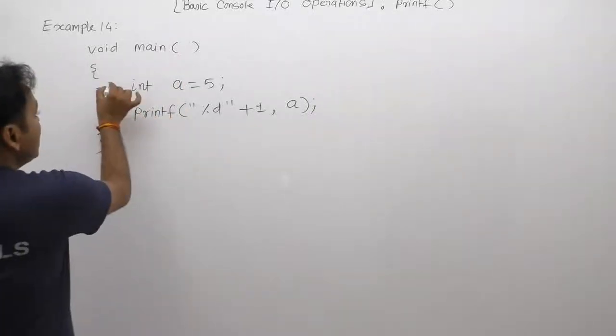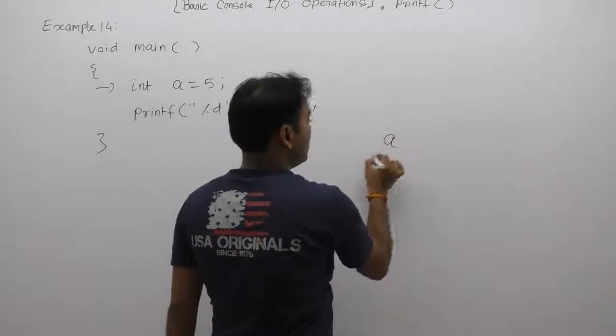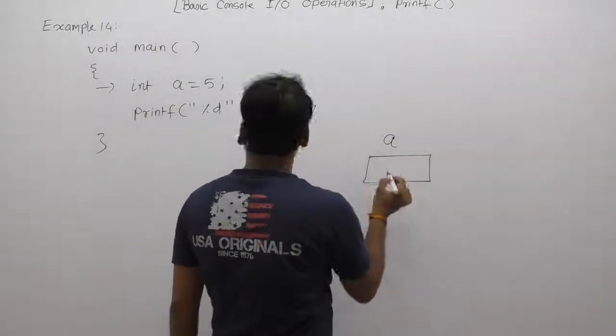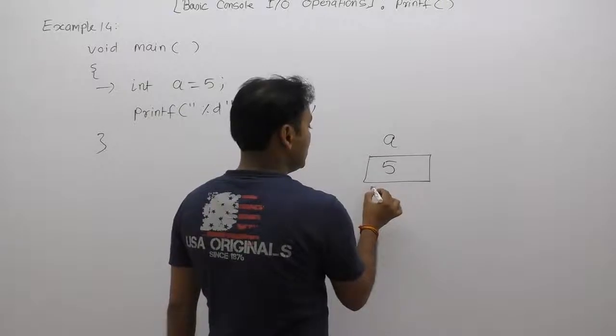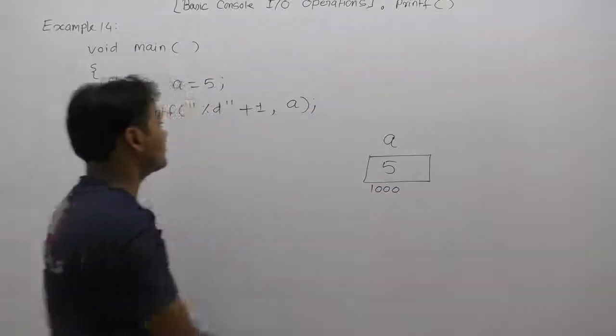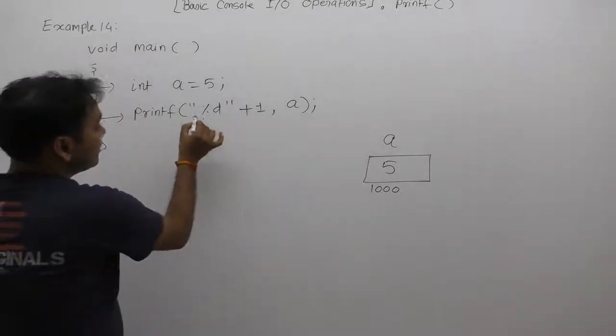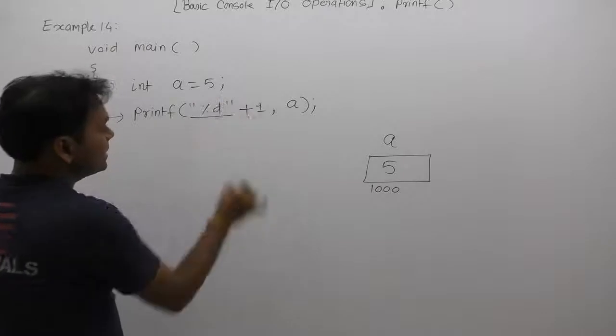First of all, we are declaring a variable, so there is memory allocation for variable a with the initial value of 5. We can take any memory address, maybe something like 1000. Next, before processing this printf, we are managing the string inside memory.